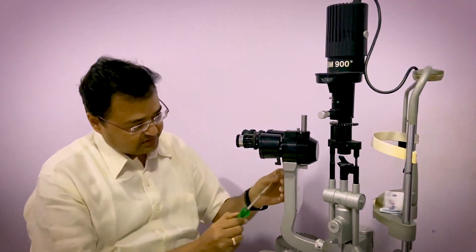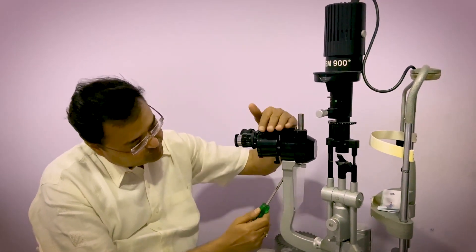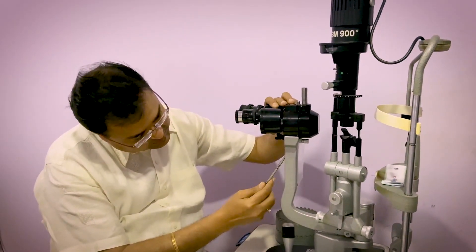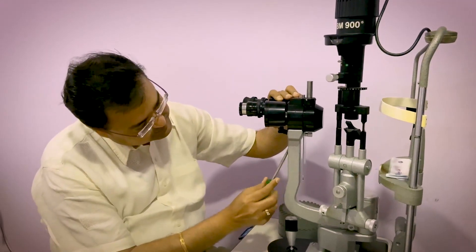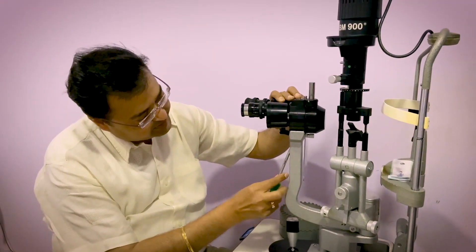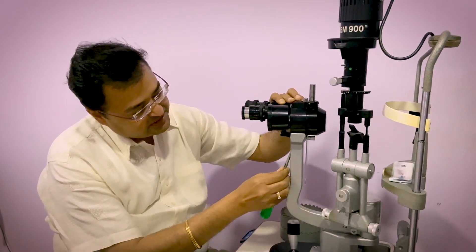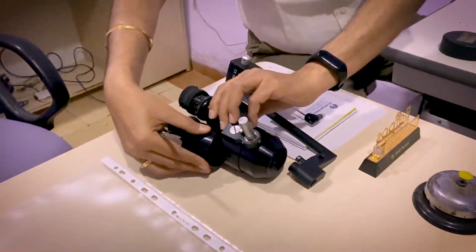Then take a screwdriver. There is a screw here in the Haag-Streit slit lamp. You have to take out the screw by supporting it. So this is the way. You have to make sure that you are holding the eyepiece so that it doesn't fall down. And unscrew it properly. Throughout the procedure, make sure that you don't damage the attachment. Now this is the eyepiece which has been removed and has been placed safely on the table.